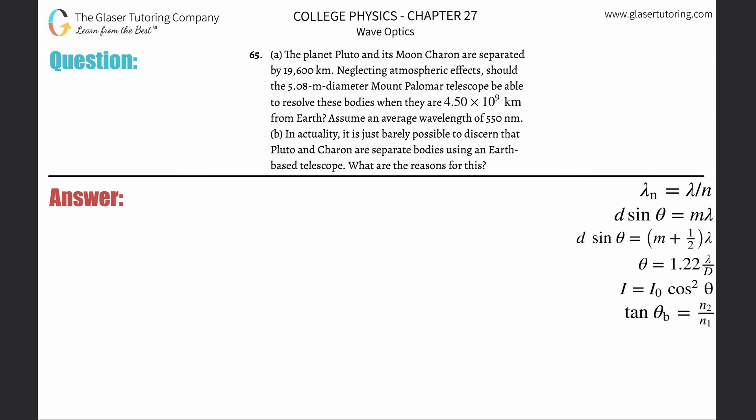Number 65, letter A. The planet Pluto and its moon Charon are separated by 19,600 kilometers. Neglecting any atmospheric effect, should the 5.08 meter diameter Mount Palomar telescope be able to resolve these bodies when they are 4.5 times 10 to the 9 kilometers from Earth? Assume an average wavelength of 550 nanometers.